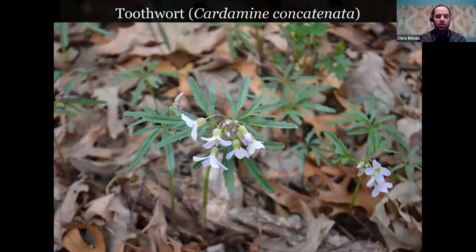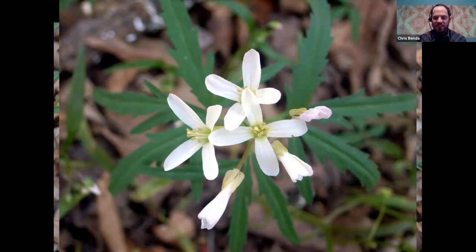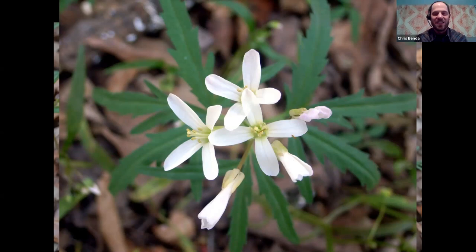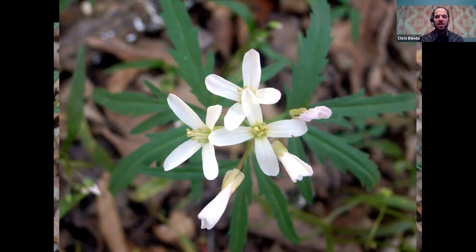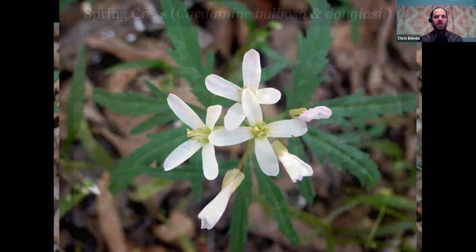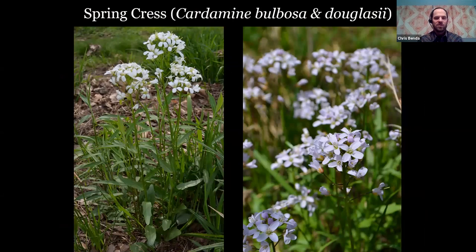Toothwort is another early and pretty common bloomer. Formerly Dentaria laciniata — 'dentaria' means tooth, 'laciniata' means cut leaves, making it cut-leaf toothwort. Taxonomists have placed it now in the genus Cardamine, which it does actually resemble. There are other Cardamine species in Illinois too: the bulbous spring cress, Cardamine bulbosa, and the purple cress in the northern part of the state with a slightly more purplish tinge. These are mustard species that bloom in Illinois.